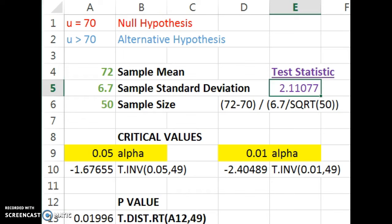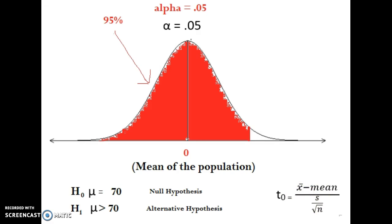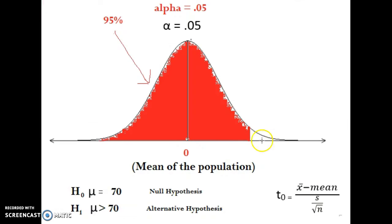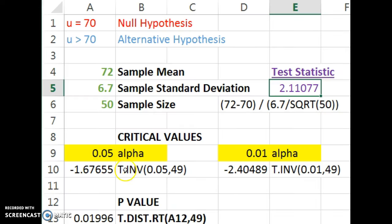To go through an example quickly in Excel, you have your null and alternative hypothesis, gather your sample data, and calculate your test statistic using the formula — type it into Excel or your calculator and you get that value. Then you need your critical value. The value of alpha is completely chosen by the person conducting the hypothesis test — they could choose 0.01 or 0.05. For 0.05, you're finding the cutoff value where there's only 5% left in the right-hand tail. Type in the formula t.inv in Excel with 0.05 and 49 degrees of freedom, since degrees of freedom is always one less than the sample size.